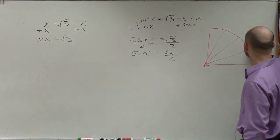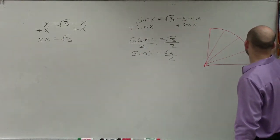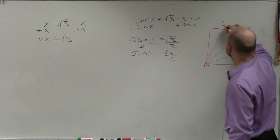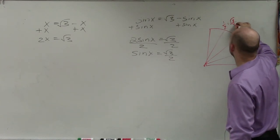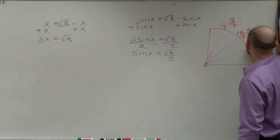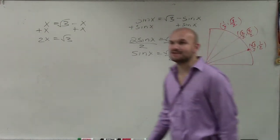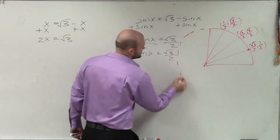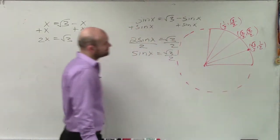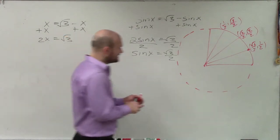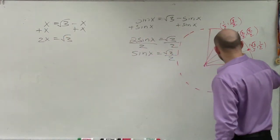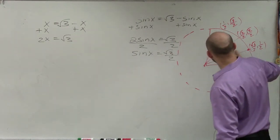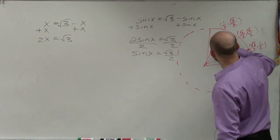We know that this point is square root of 3 over 2 comma 1 half. This one is square root of 2 over 2 comma square root of 2 over 2. And this one is 1 half comma square root of 3 over 2. So I chose a problem that's going to have the exact same angles as the other one. The first angle is pi over 6, the next is pi over 4, and that's pi over 3.